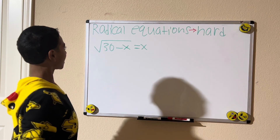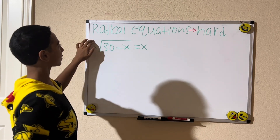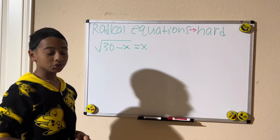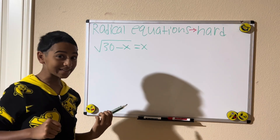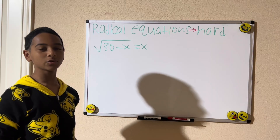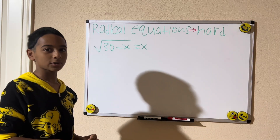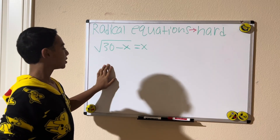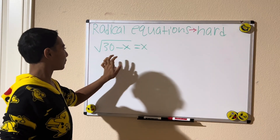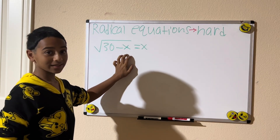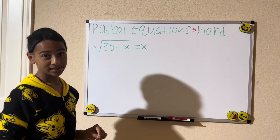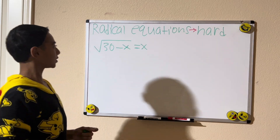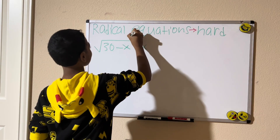Welcome back to my channel. Today we're solving radical equations, hard edition. Go check out my radical equations easy if you have trouble solving them or don't know how to. Here we have an equation: the square root of 30 minus x equals x.